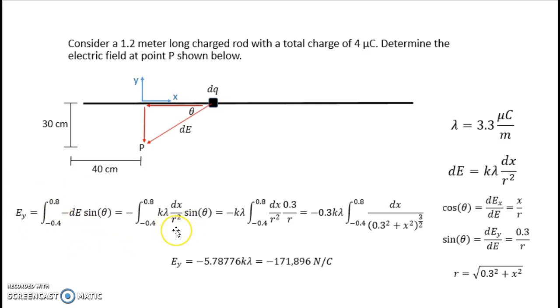Replace dE with k lambda dx over r squared. Replace sine theta with 0.3 divided by r. Replace r with our Pythagorean theorem expression. And this is the final integral that I need to evaluate. I can either do it by hand or by Wolfram Alpha. And I come up with negative 171,896 newtons per coulomb.